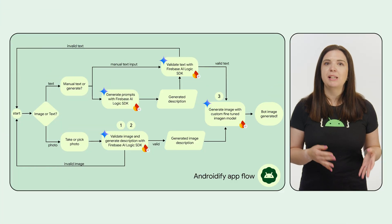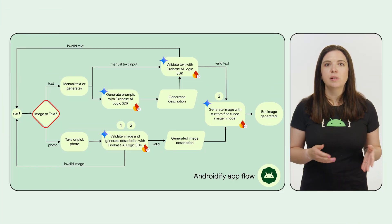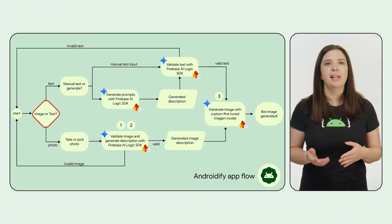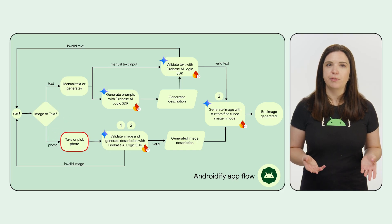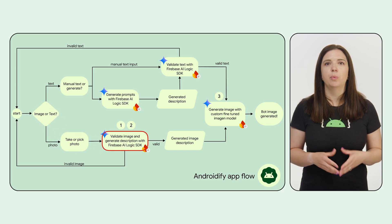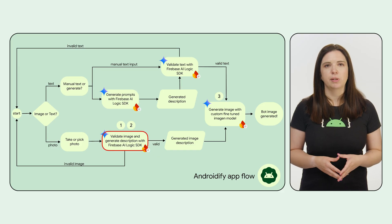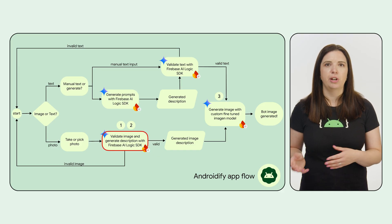As I said, the four main technologies power the experience. There are a few steps based on which flow a user takes. Let's follow the flow of taking or picking a photo. Once a user picks a photo, we use Firebase AI Logic with Gemini to validate that the image contains a person and enough information for us to generate a bot.